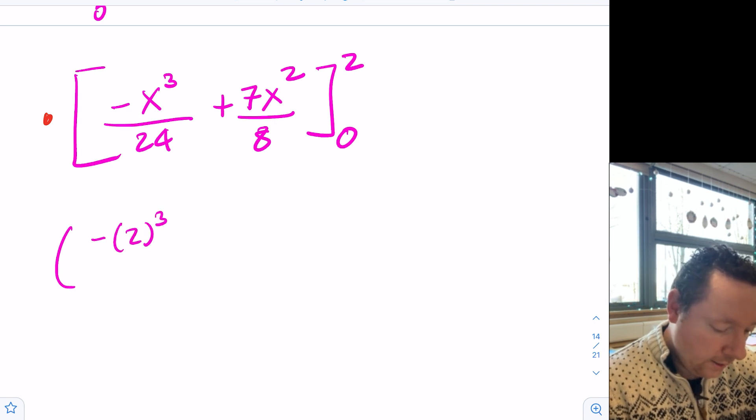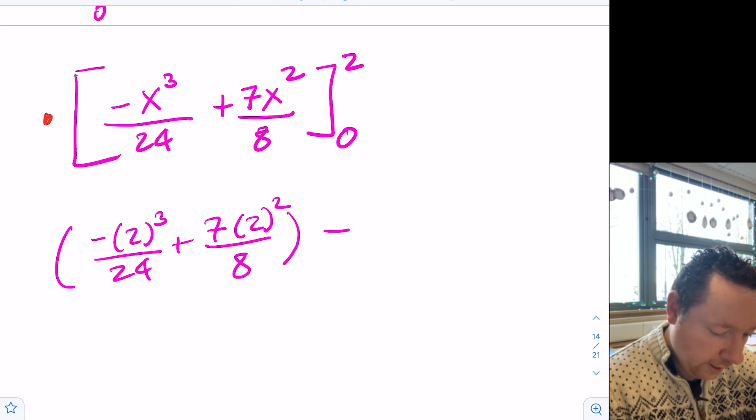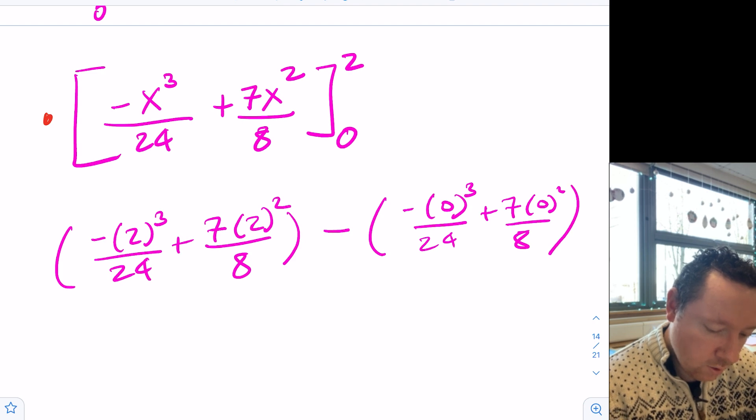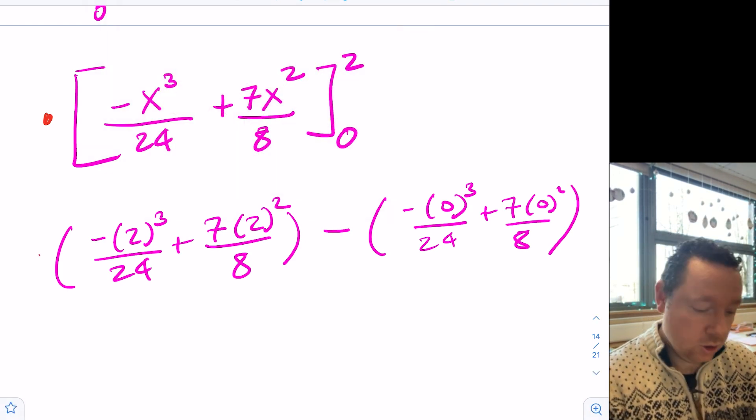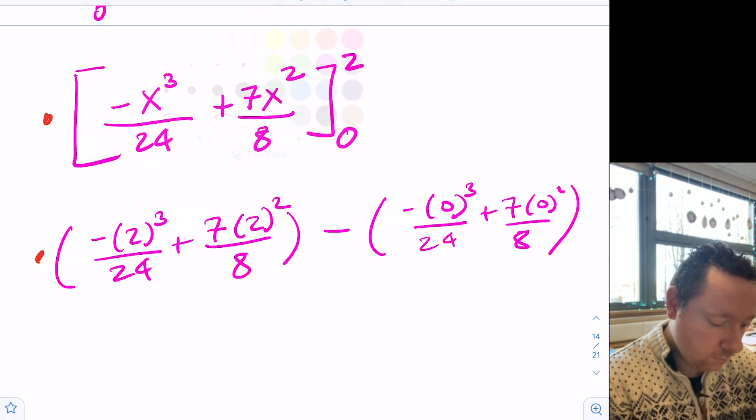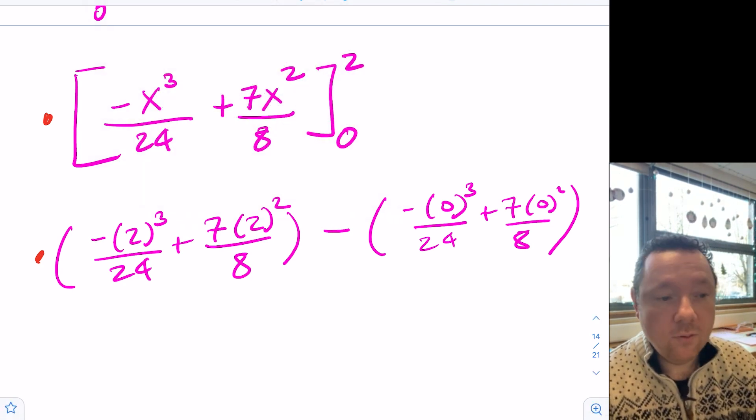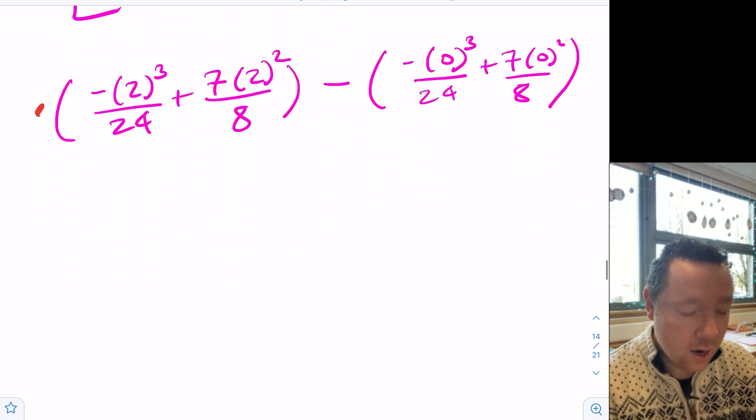So let's move on and substitute our limits in. So we've got minus two cubed over 24 plus seven times two squared over eight. Take away minus zero cubed over 24 plus seven times zero squared over eight. Okay, so we get a mark for our substitution.